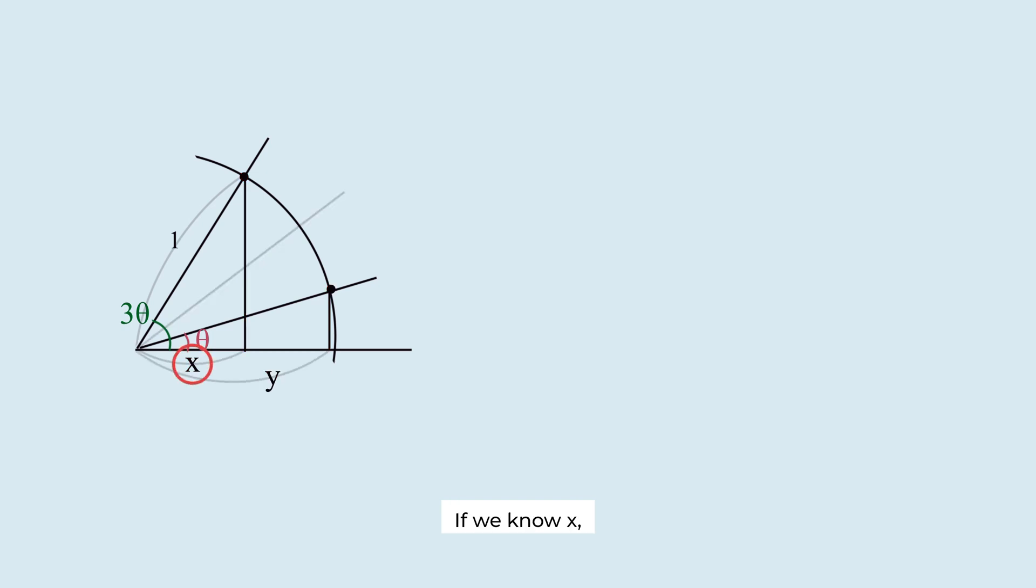If we know x, we can determine 3 theta through this perpendicular line. In a similar way, knowing y would reveal theta. So, in order to trisect an angle, we essentially need to find theta from 3 theta. In other words, it's like finding y from x.